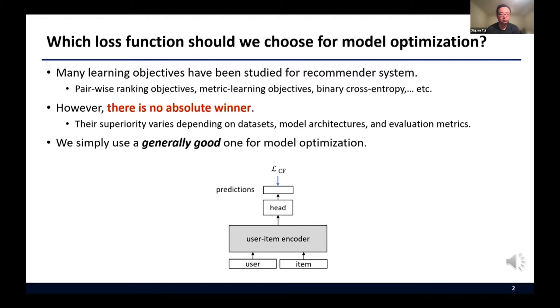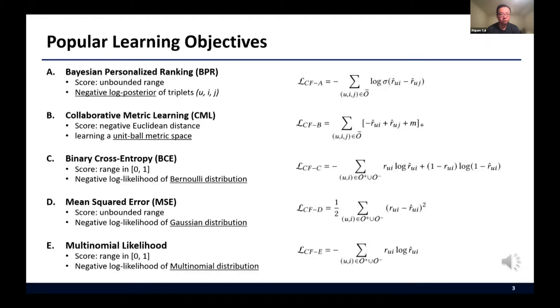Let me show you some popular examples. These are the very widely used learning objectives to optimize a recommendation model. I will use alphabets from A to E to denote these objectives throughout this presentation.